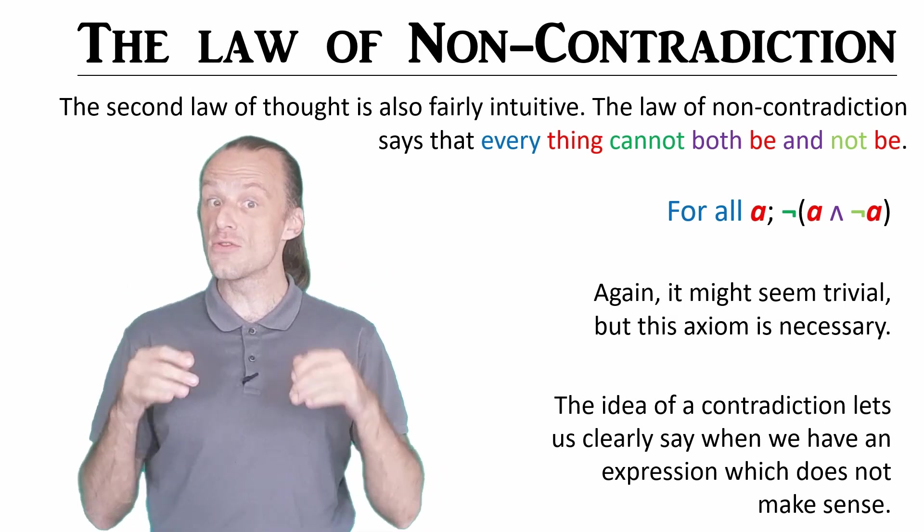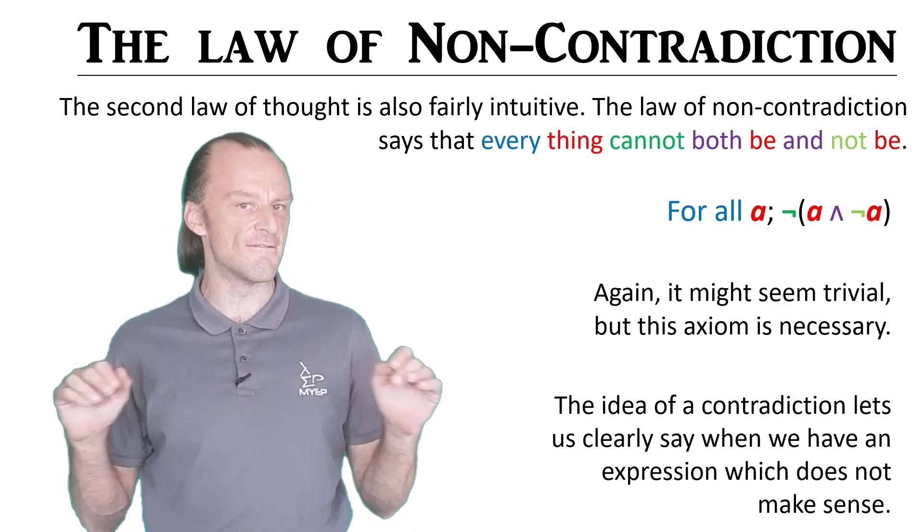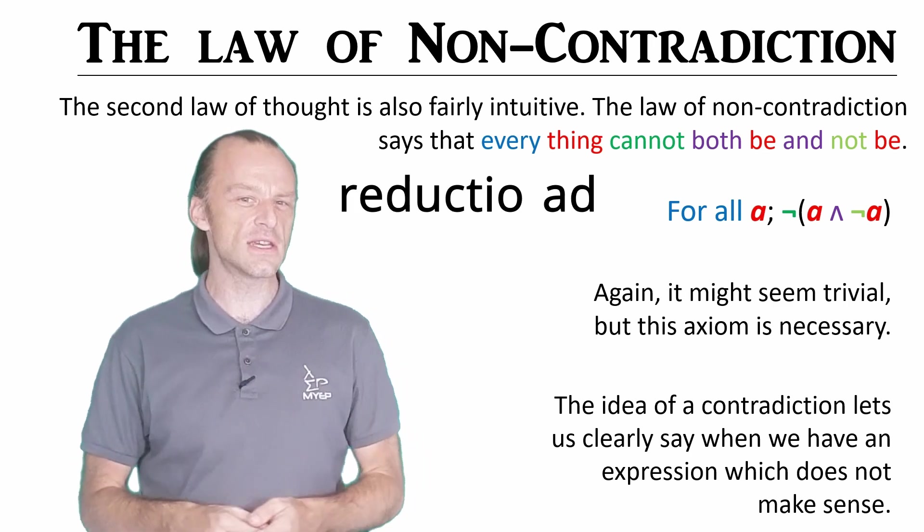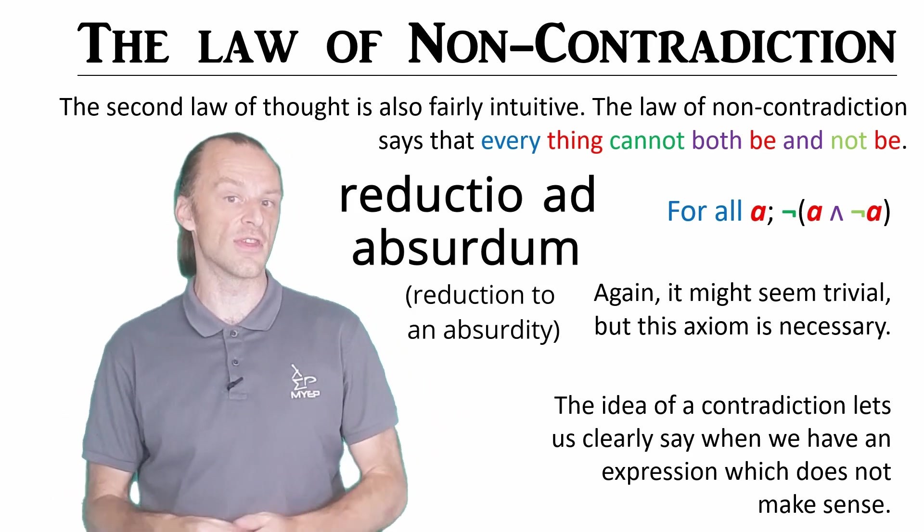If we can show that an argument leads to a contradiction, then this is a reason to say it is invalid. We call this reductio ad absurdum, or reducing the argument to something crazy.